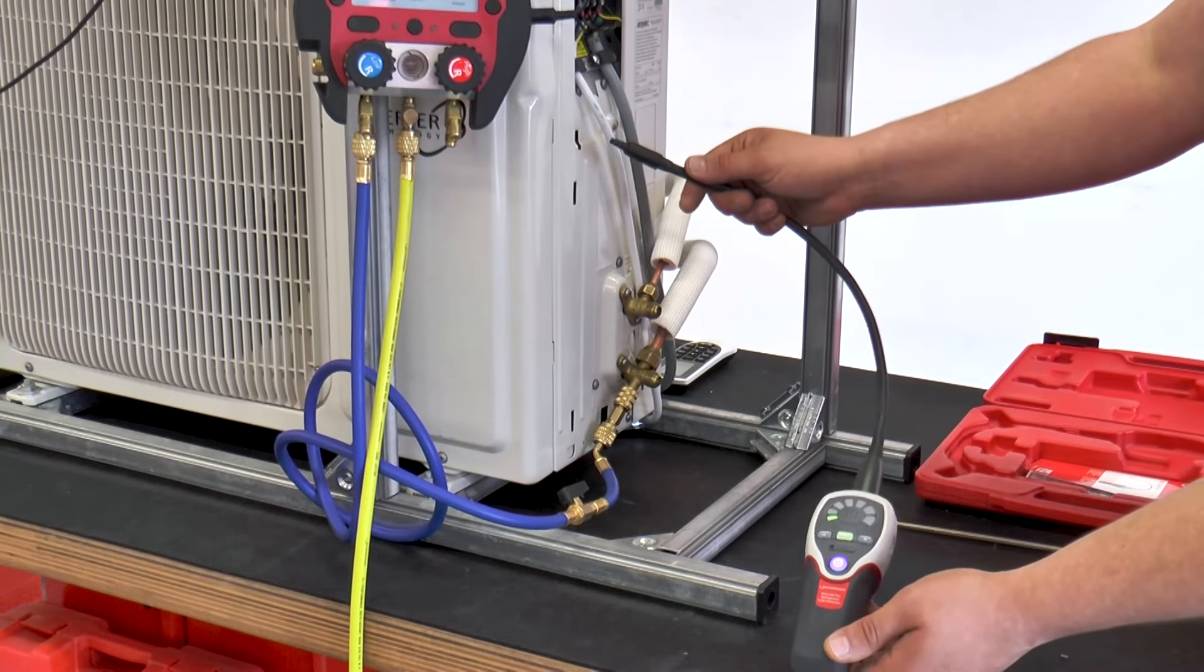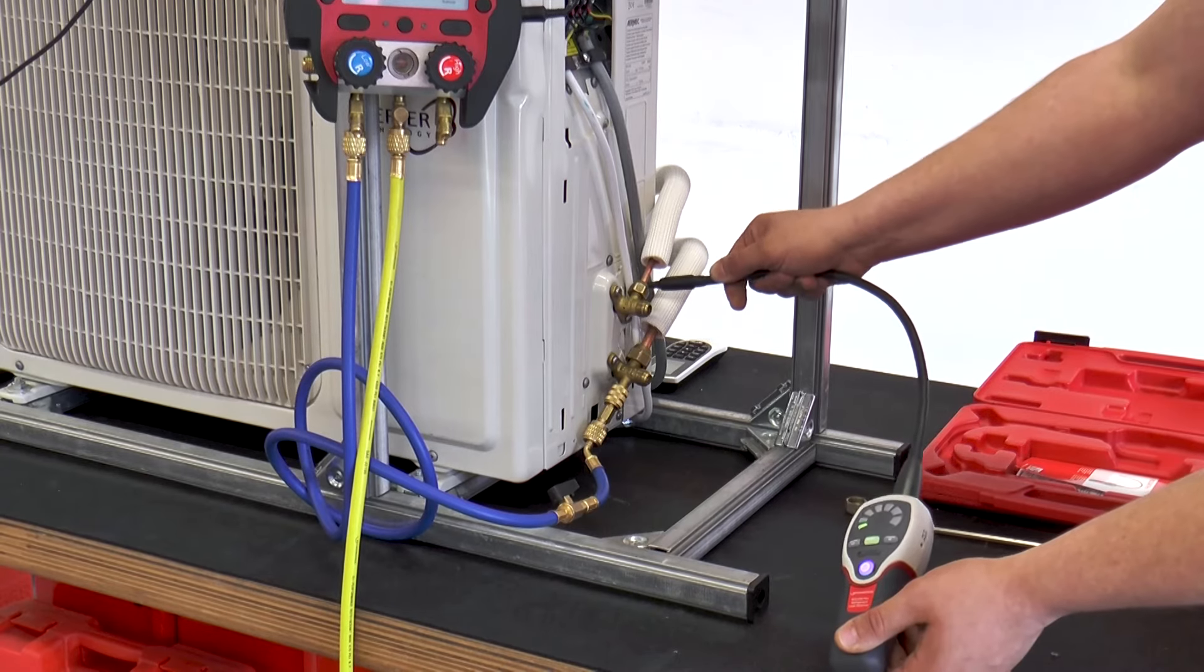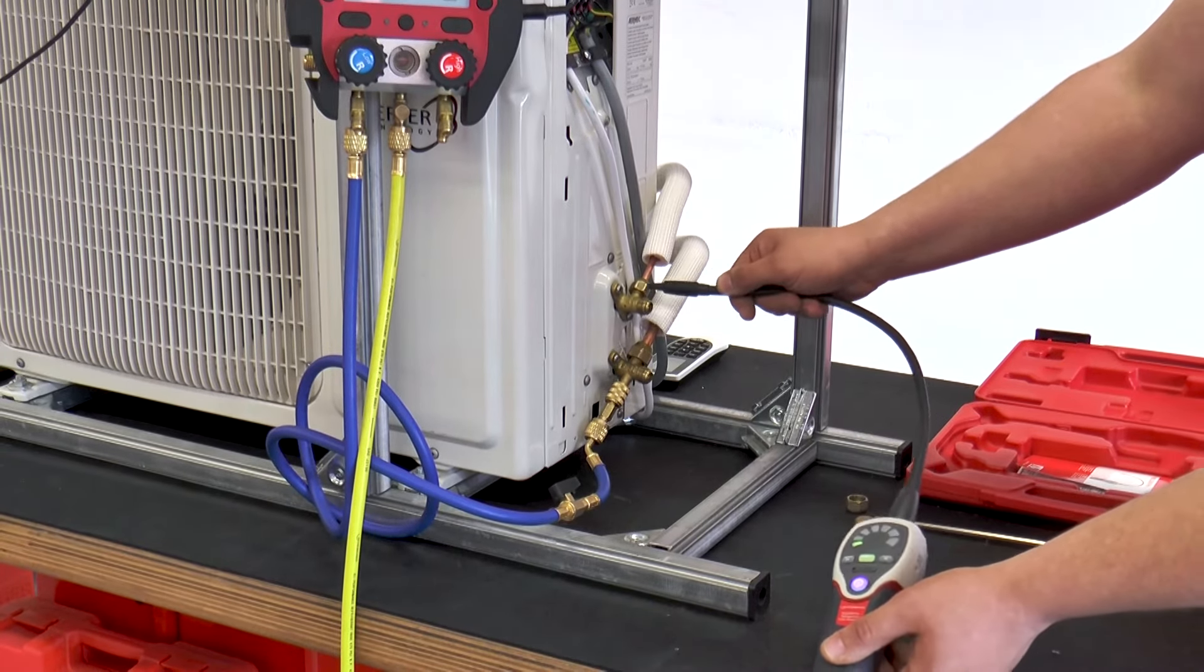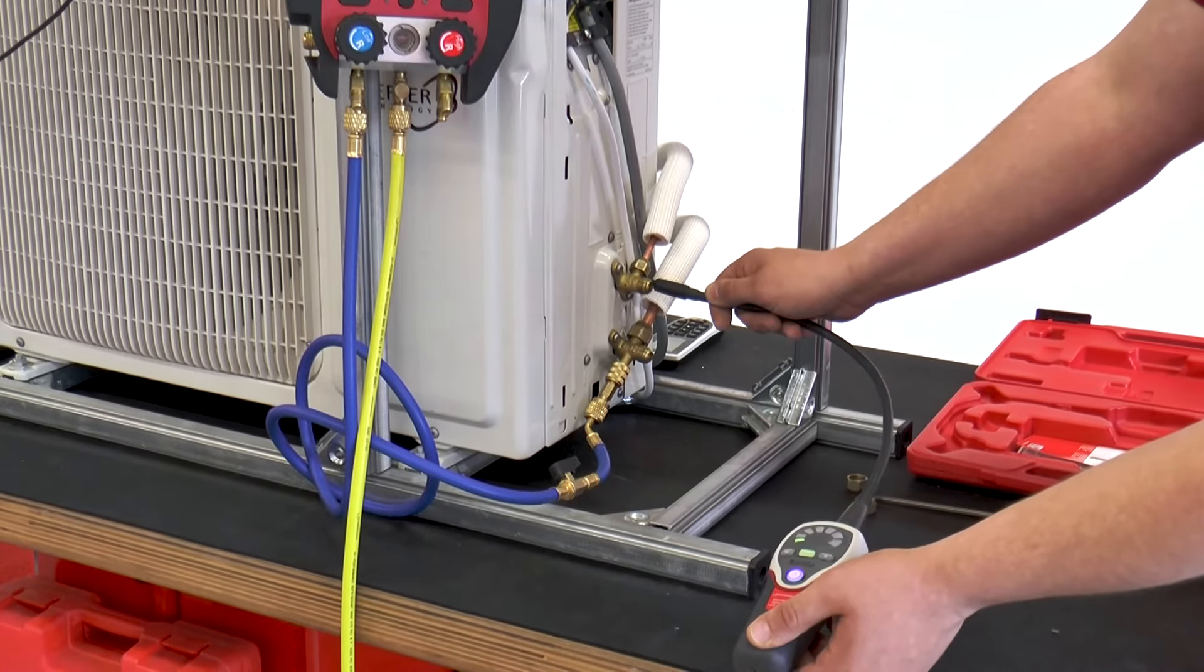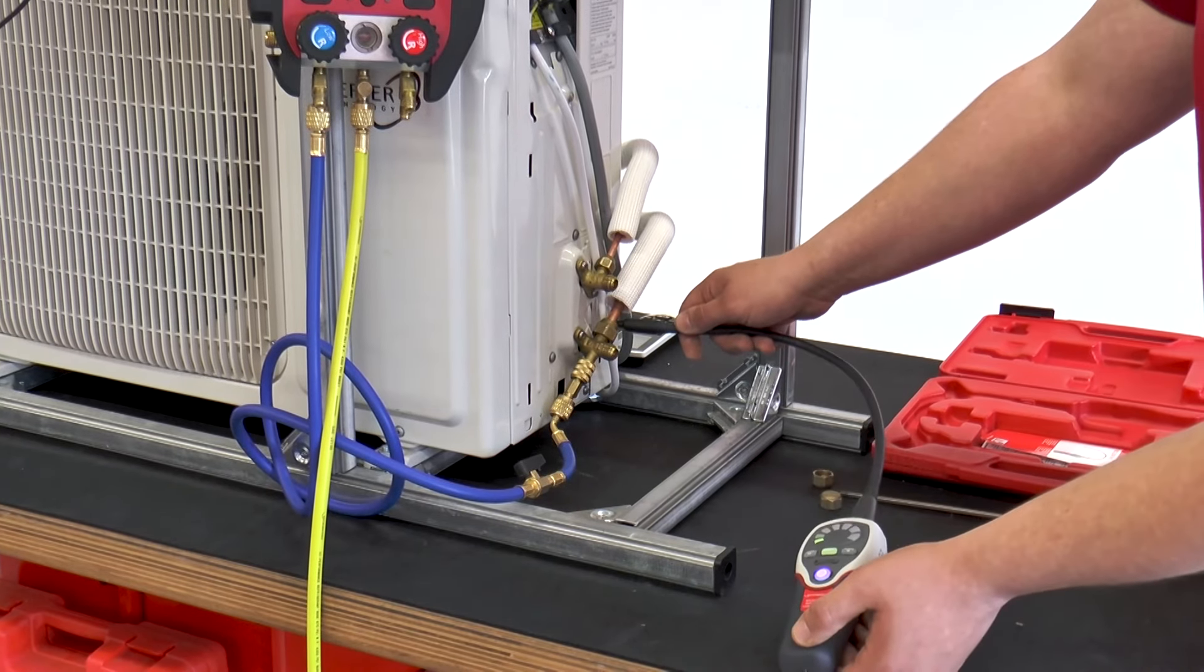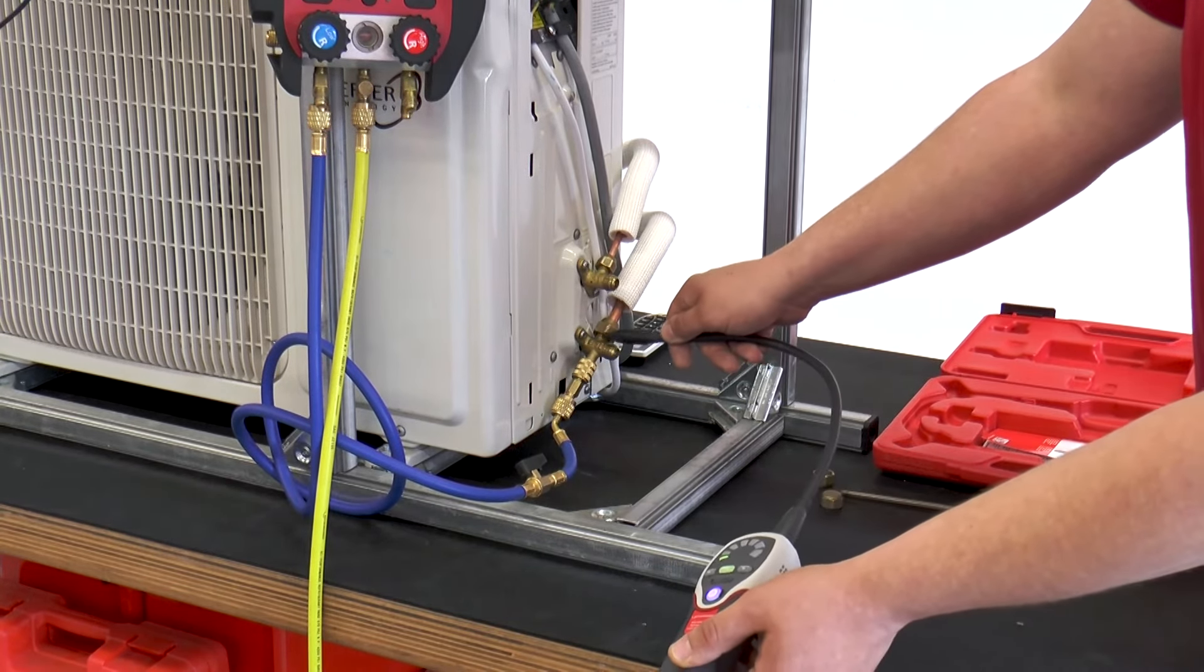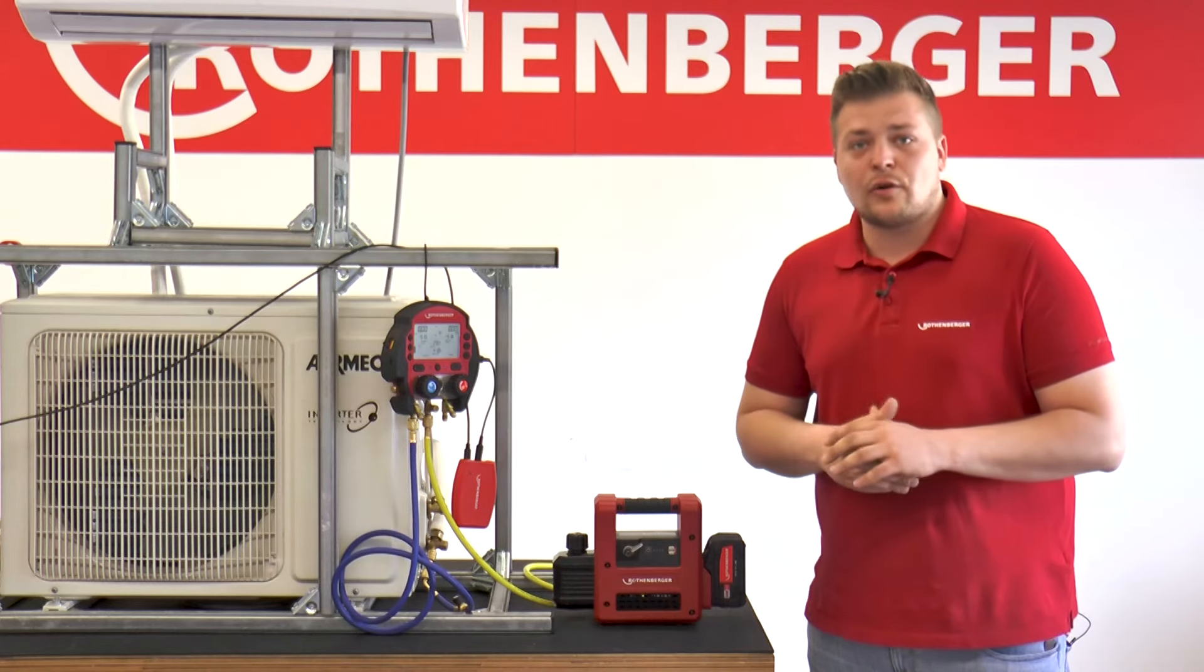Before the air conditioning system is switched on, it must also be inspected with an electronic leak detector. During this inspection, all connections and components are inspected. If a leak is detected, the refrigerant must be removed from the circuit, the leak must be repaired, and all previous steps must be carried out again.